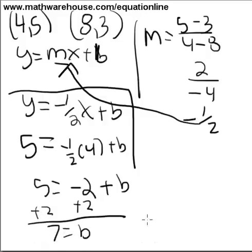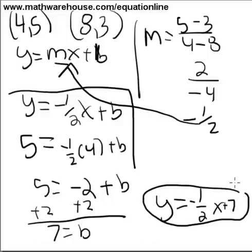And the last step is just to write the whole equation out. y equals negative 1 half x plus 7. That's the final answer here.